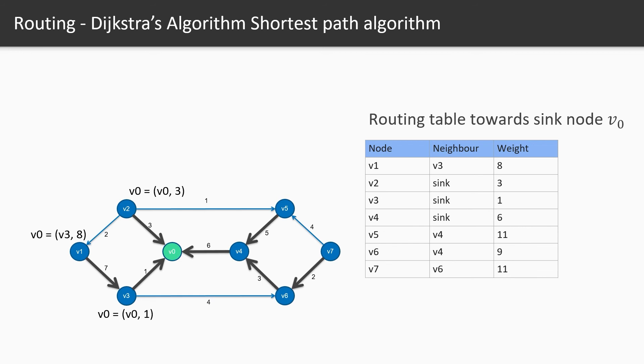So this table is constructed for only the sink node v0. In the same way every node will have entries in the routing table for every other sink node. As an example look at the v2 node table. It stores the information of all the possible sink nodes and also tells us which neighbor node we want to forward this packet to and what would be the total weight of the path from this node to the destination node.